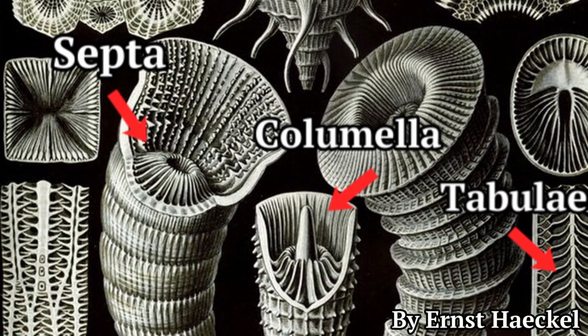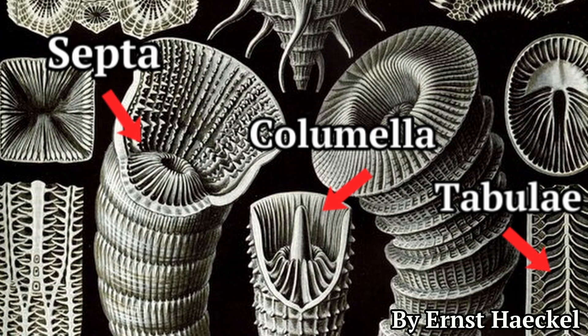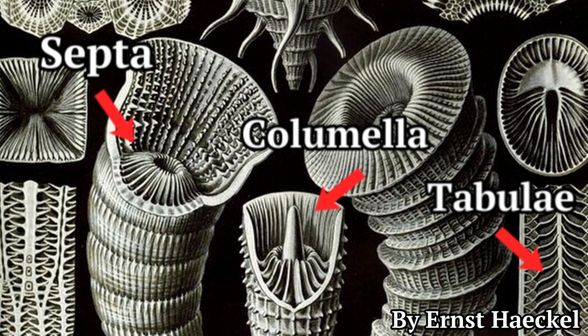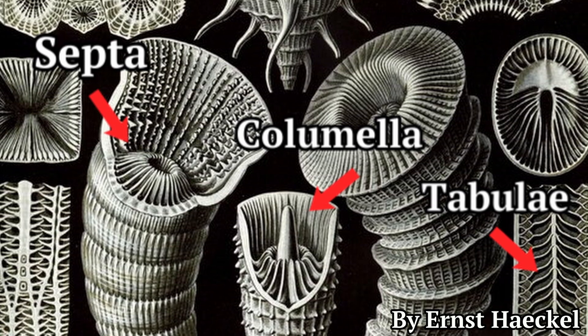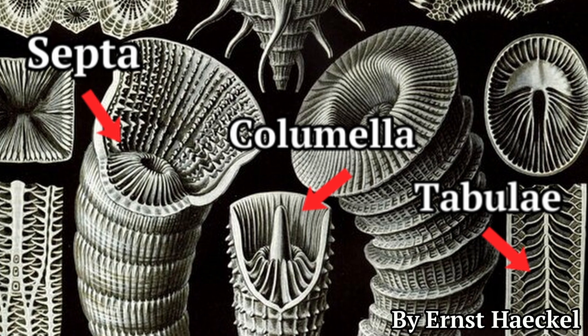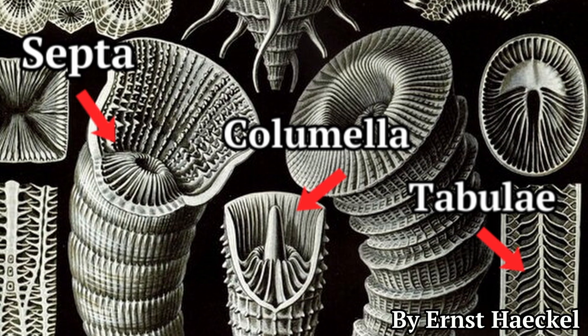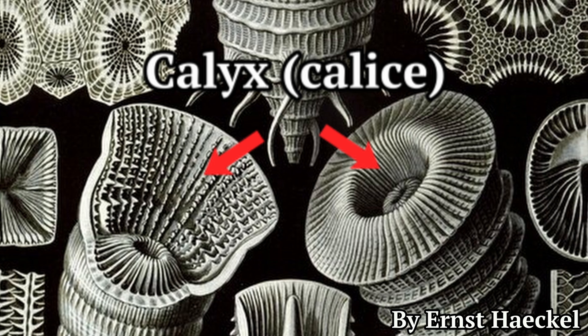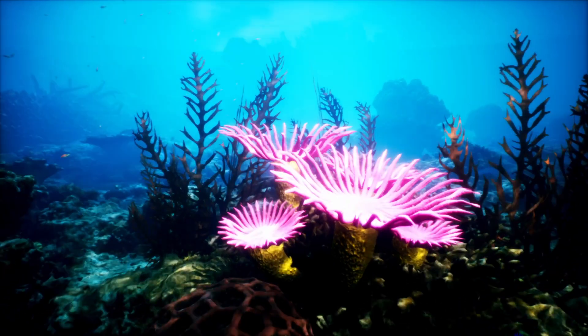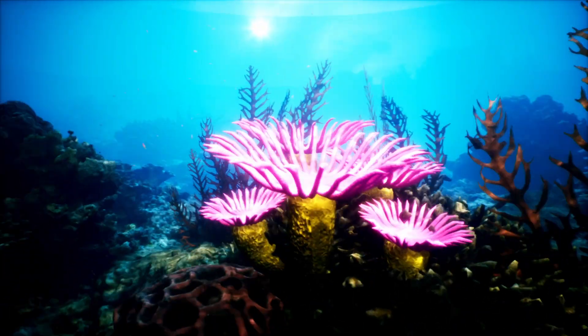Rugose corals have an exoskeleton consisting of vertical elements called septa. These septa radiated outwards from a central column called the columella, creating a cone-like shape. The upward growth leaves behind a trail of flat horizontal skeletal plates called tabulae. Inside the exoskeleton, the coral's soft tissues were organized around the central body cavity known as the calyx. Rugose corals also had tentacles surrounding the calyx opening, which they used for feeding and sensing the environment. While most rugose corals lived as solitary individuals anchored to the seafloor, some species were colonial.